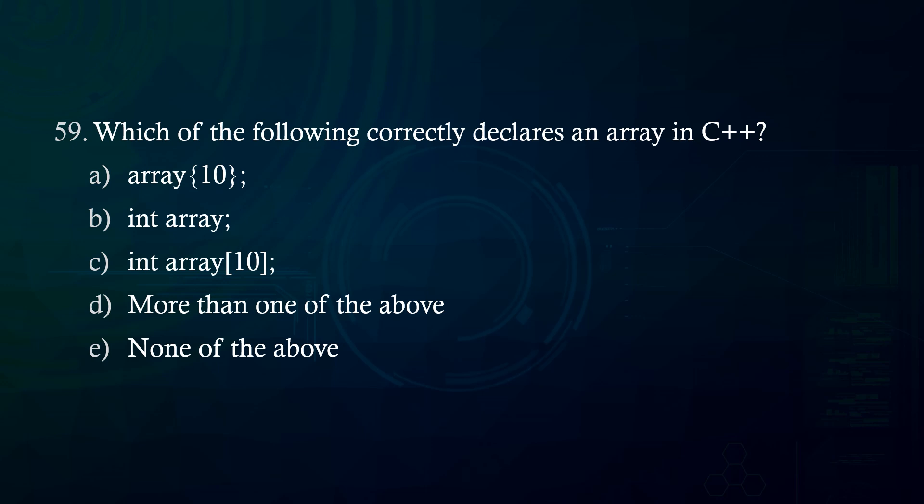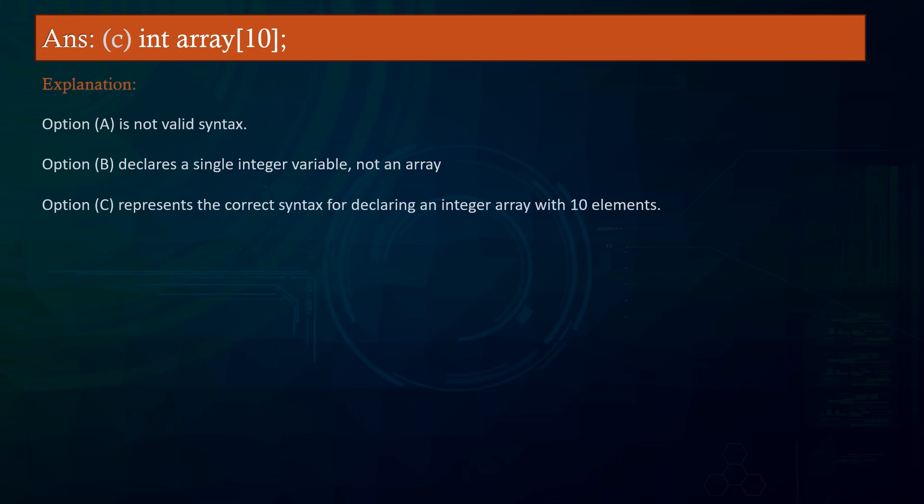Which of the following correctly declares an array in C? A. array[10] B. int array C. int array[10] D. More than one of the above E. None of the above. Answer: int array[10]. Explanation: Option A is not valid syntax. Option B declares a single integer variable, not an array. Option C represents the correct syntax for declaring an integer array with 10 elements.